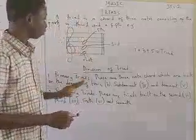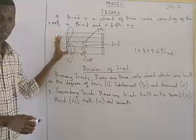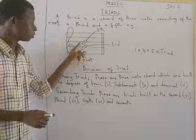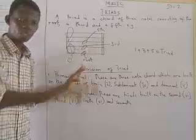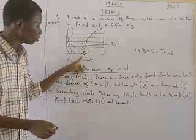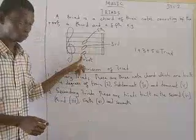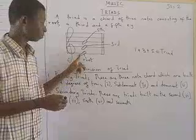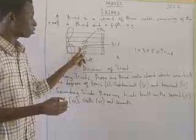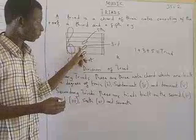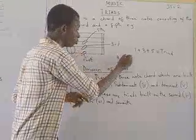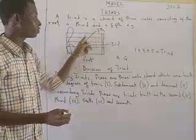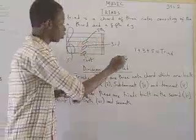Now we're looking at this diagram. This is a treble staff. We have three notes here — one, two, three — that you play together. If you are playing piano, you strike them together. This is the root, which is the first note, and it falls on line E. The second note, which is the third, falls on line B.